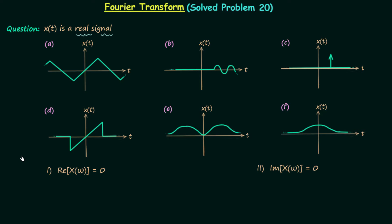In the first part, the question is asking us to find the time domain signals whose Fourier transform's real part is equal to 0. We have signals a, b, c, d, e, f — 6 signals — and we need to choose all the signals whose Fourier transform's real part is equal to 0.